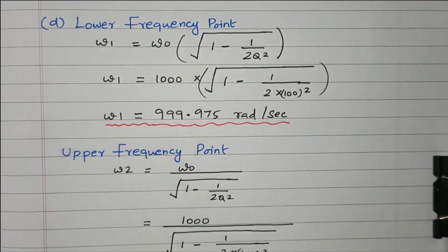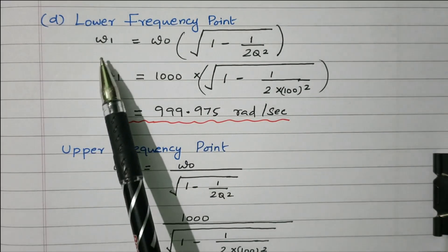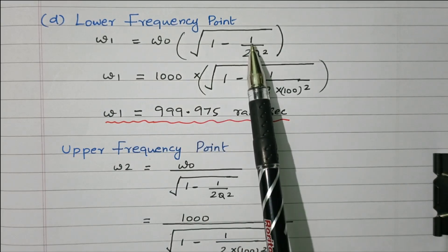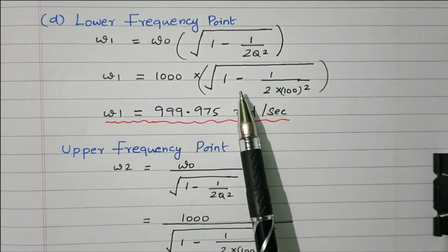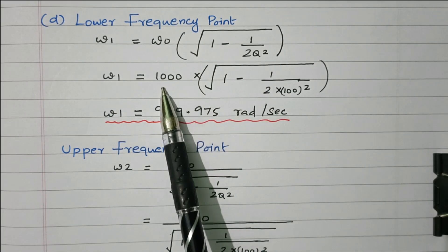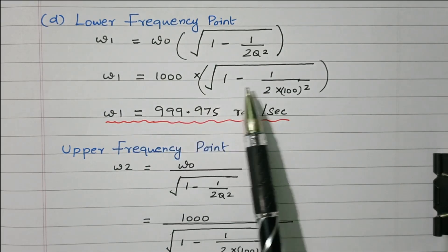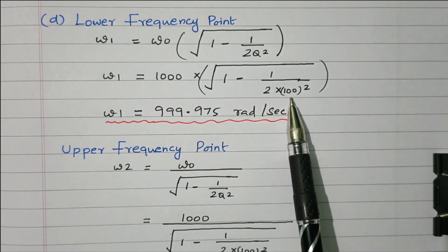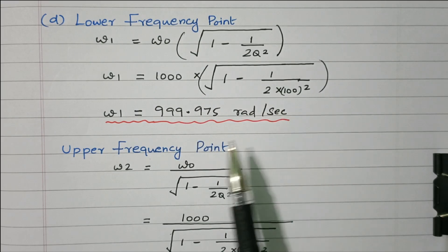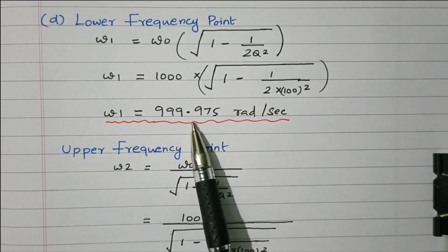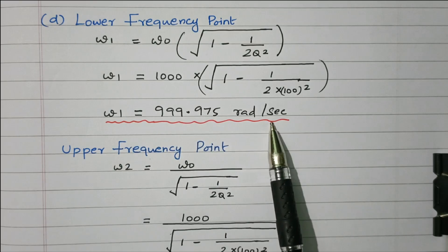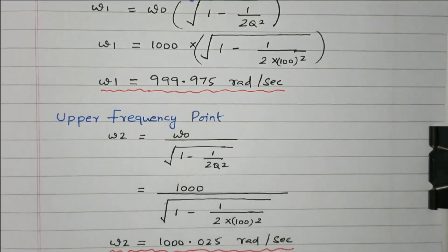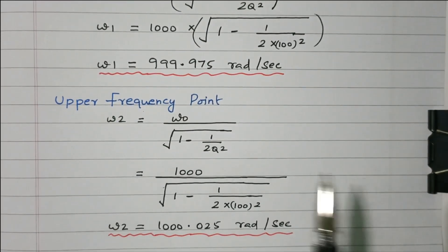Now we'll find the lower frequency point omega 1. The formula is omega naught times the square root of 1 minus 1 divided by 2Q squared. With omega naught equal to 1000 and Q equal to 100, substituting gives 1000 times the square root of 1 minus 1 divided by (2 times 100 squared). Simplifying, omega 1 equals 999.975 radian per second.